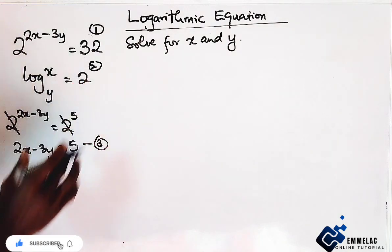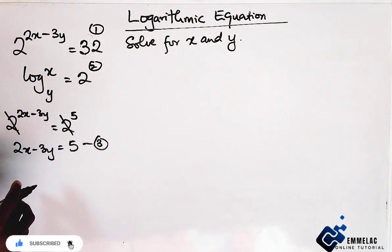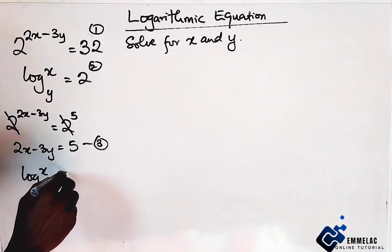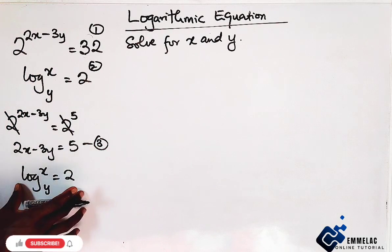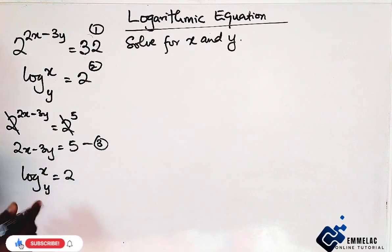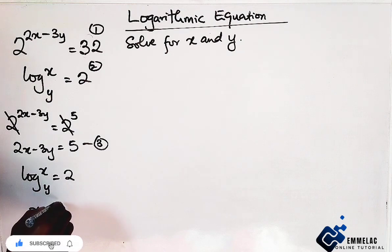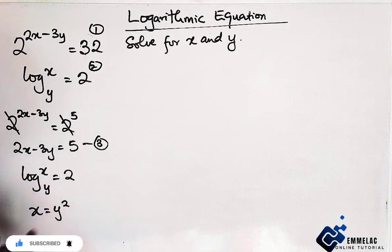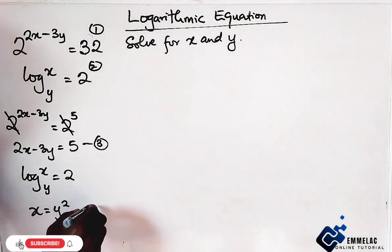Reducing it to a simple algebraic expression. Here we have log x base y equals 2. Now, using indices or transforming it to indices, we can have that x equals to y raised to the power of 2. Let's make this equation 4.